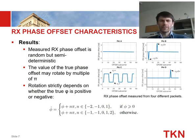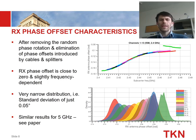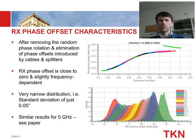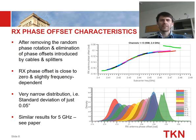The rotation strictly depends on whether the true phi is positive or negative — so this is a random process. In the wired setup it is straightforward to remove those incorrect values. After removal and eliminating the phase offset introduced by cables and splitters, we obtain clean results. The upper figure shows the receive antenna phase offset between the two antennas for different subcarriers and channels in the 2.4 GHz band — values are close to zero as expected. The lower figure shows the distribution is narrow, confirming very precise measurements.